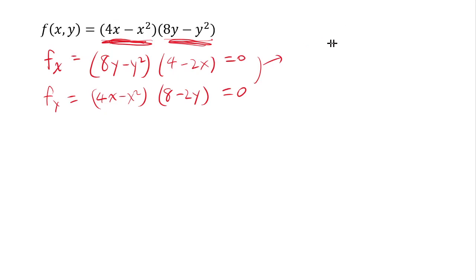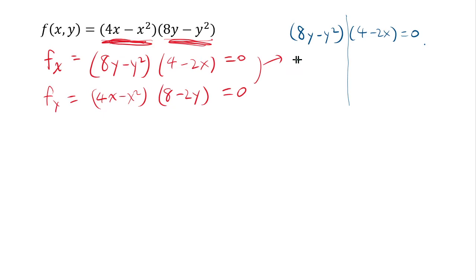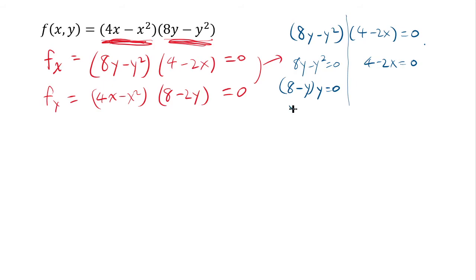You need (8y − y²)(4 − 2x) = 0. When two things multiply to 0, either one of them must be 0. The first factor (8y − y²) can be factored by pulling out y, giving y(8 − y) = 0, so y = 0 or y = 8. The second factor gives 4 − 2x = 0, so x = 2. So you have three different cases: y = 8, y = 0, or x = 2.